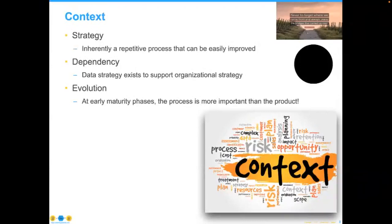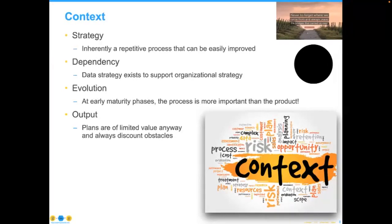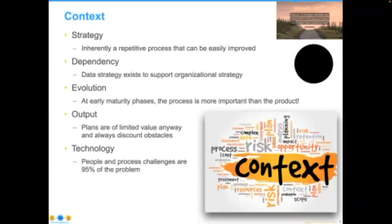At the most basic level, it's: what can we use data to do in order to better help the organization succeed in its strategy? Your process should evolve as it goes through — you'll start out rough, but a couple of cycles through a well-defined process is much more important than the actual product. 95% of problems in our data space, and therefore in data strategy, are people and process challenges, borne out year after year in research. And yet we overemphasize the technology component.